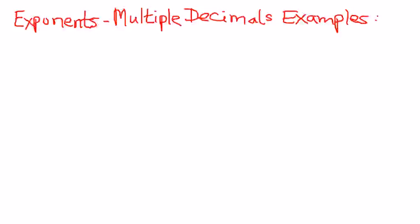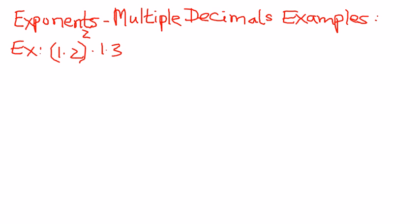Welcome to this presentation. In this presentation, we shall see how to simplify exponents containing multiple decimals. Let's take a simple example: 1.2 raised to the power of 2 times 1.3 raised to the power of 2.